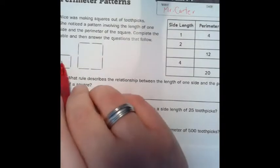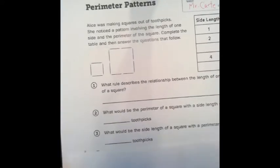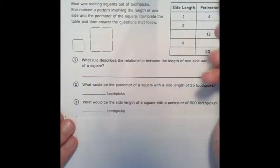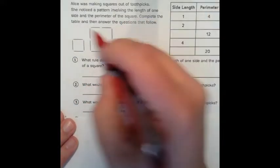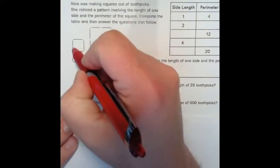She noticed that when the side length was one, she kind of, let me hold back up here. So she noticed that when the side was one, that the perimeter would be four. Because you have one, two, three, four.